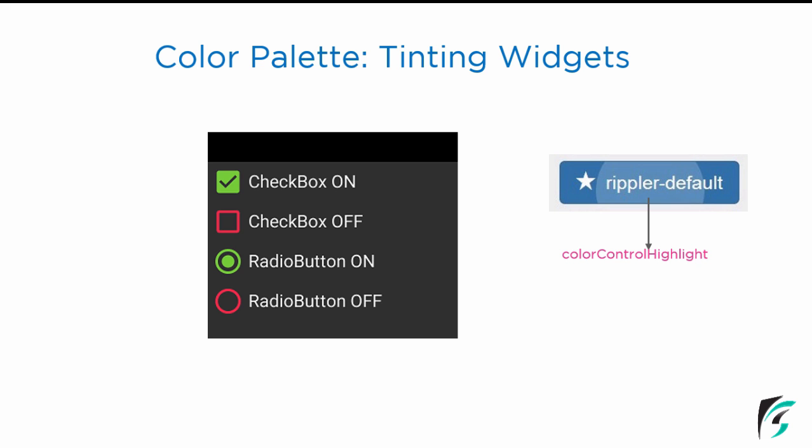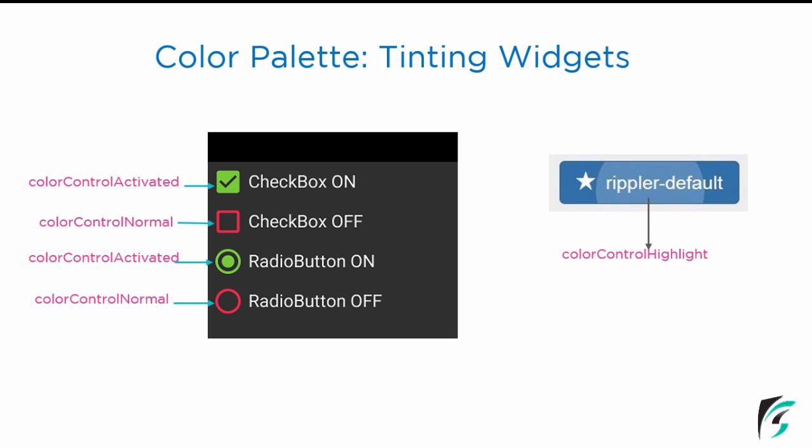A few of the widgets where we can control color properties are the checkbox and the radio button. There are two states for each. When the checkbox is checked, the color attribute used is colorControlActivated. When the checkbox is not checked, its color is controlled by colorControlNormal. The same applies to the radio button — when it is selected, its color is changed by colorControlActivated, and when it is not selected, the color is controlled by colorControlNormal.